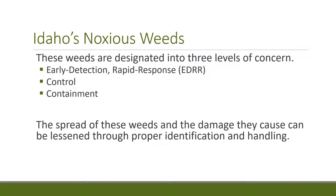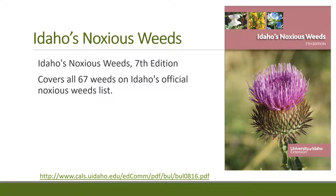The spread of these weeds and the damage they cause can be lessened by proper identification of the plant, knowing which category it's in, and handling it when moving from place to place. As an example, Idaho has 67 weeds on its noxious weed list. For more information, you can Google Idaho's noxious weeds from the University of Idaho or click on the linked PDF, which outlines each of the 67 noxious weeds.